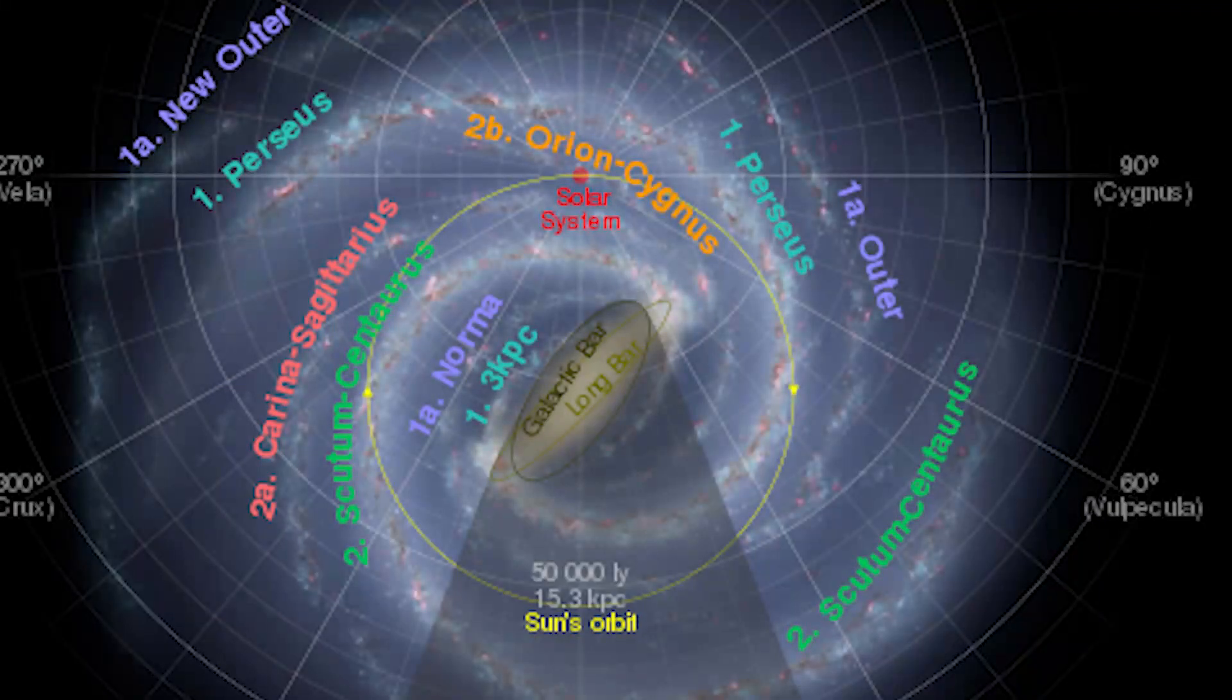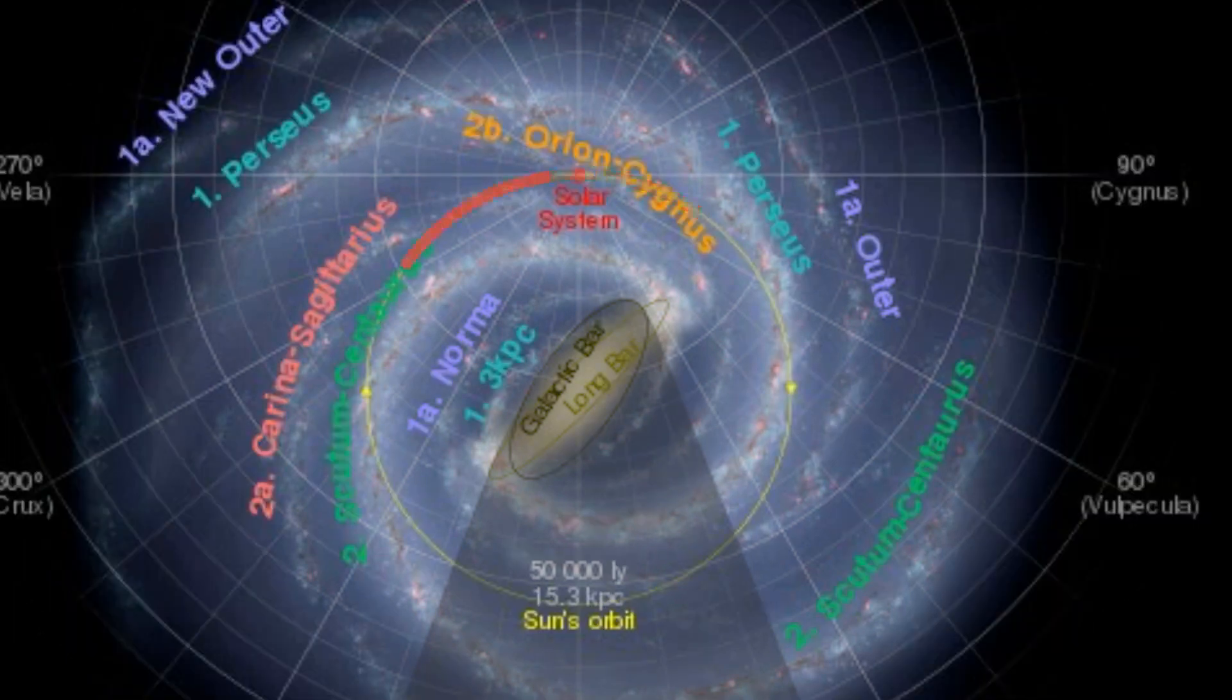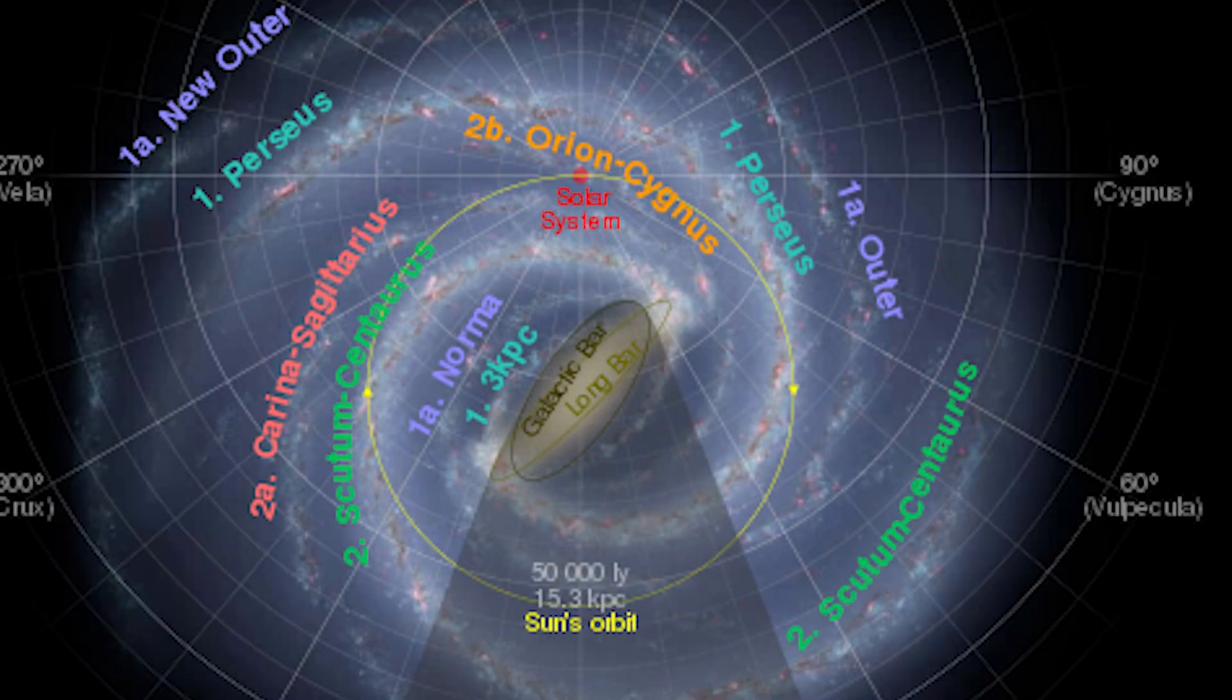But even that's tiny, as it takes 7.25 quadrillion seconds, or 230 million years, for the Sun to complete one orbit around the Milky Way galaxy. That means that the last time the Sun was in this region of the galaxy, the dinosaurs were just starting to evolve.